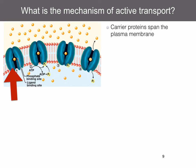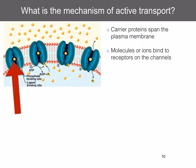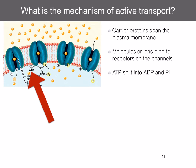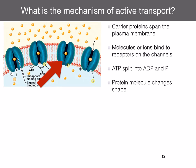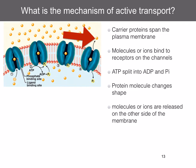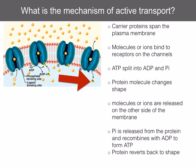Let's have a look at the mechanism of active transport. Active transport involves carrier proteins which span the plasma membrane, and they accept the molecules or ions to be transported on one side of the membrane. The molecules or ions bind to the receptors on the channels of the carrier protein. ATP is split into ADP and inorganic phosphate. As a result, the protein molecule changes shape, and the molecules or ions are released on the other side of the membrane. Inorganic phosphate is then released from the protein, and it recombines with ADP to form ATP. The protein is then reverted back to its original shape.